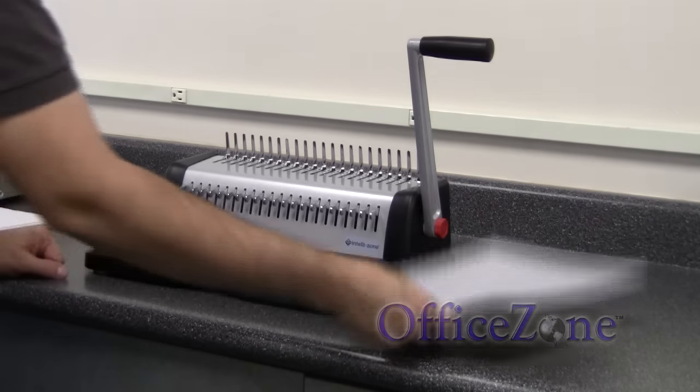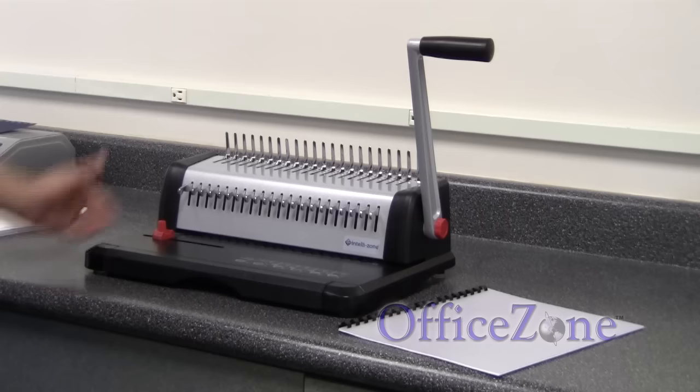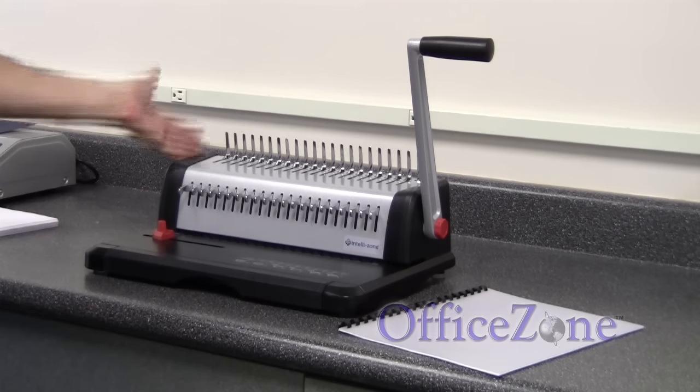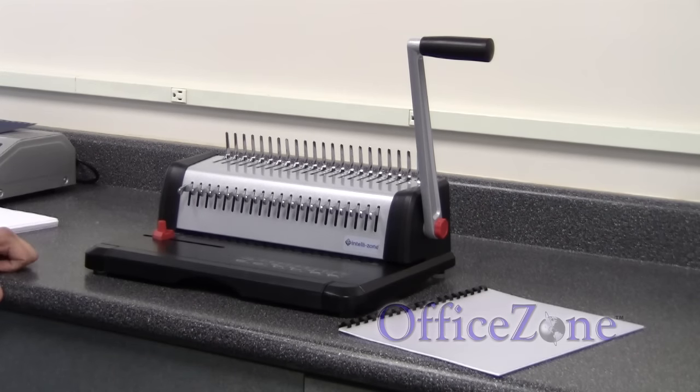So there you have it. Just a few easy steps. Punch a few sheets of paper, open the combs, a few adjustments on the machine, and you bound a book.